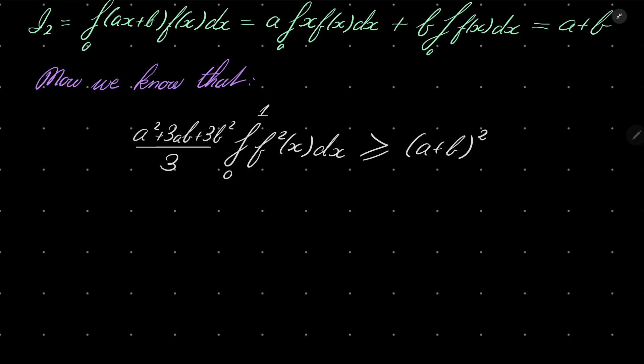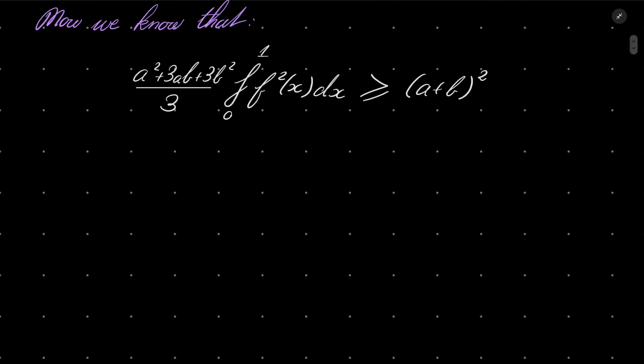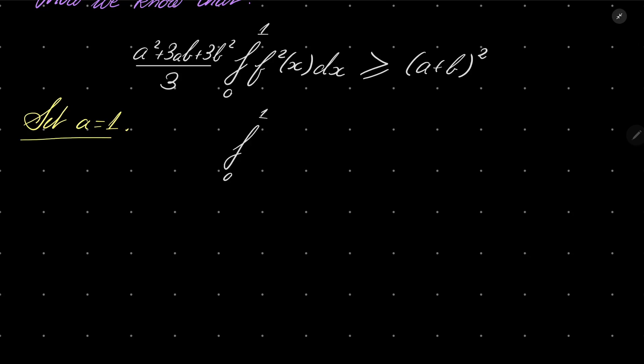Now, all we wish to do is find coefficients a and b such that after dividing by this quantity, we get 4 on the right hand side. It's a matter of experimentation. Let's start with setting a equal to 1. Then we have integral from 0 to 1 of f squared of x dx is greater than or equal to 3 times b plus 1 squared over 3b squared plus 3b plus 1.